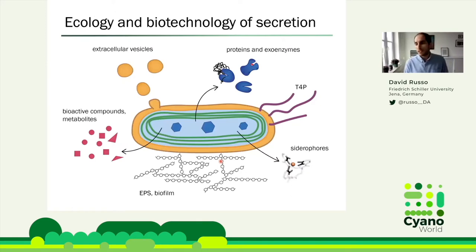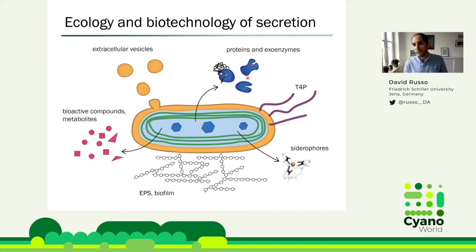Cyanobacterial secretion can mean many things: extracellular vesicles, metabolite secretion — which is also product secretion — siderophores as an example, EPS to form biofilms, and also proteins and exoenzymes. Today I'm going to focus on proteins and exoenzymes, with several projects looking at enzymes, T4P, and metabolites, because I find it really interesting to see how and why these things are secreted — looking at the function and regulation of secretion.